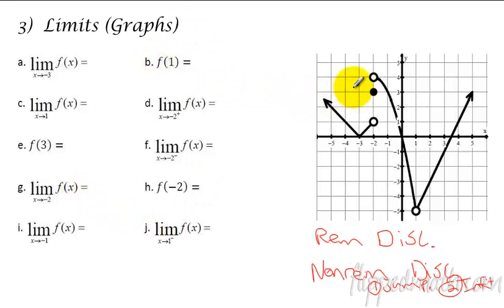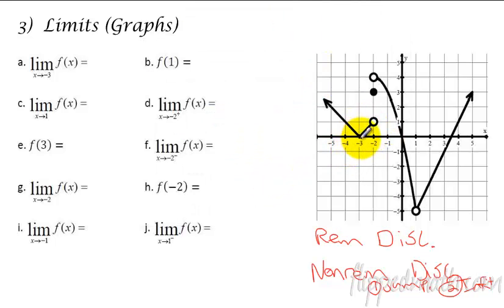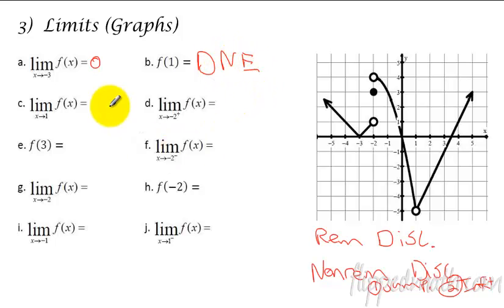On this problem, we don't have to classify whether it's removable or non-removable, but on the review and the test you will have to do that. So the limit here — since there's no little symbol on the top — means we're going to approach negative 3 from both sides, and the y value is a 0. How about f of 1? This just means what's the y value when x is 1. There is no y value, so it does not exist. The limit as x approaches 1 — we're approaching from both sides — and it approaches a y value of negative 5.